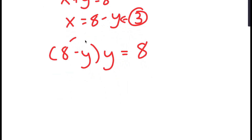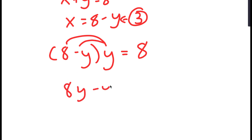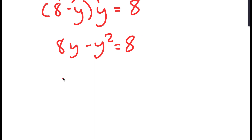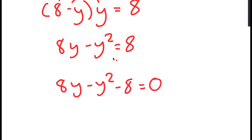Now from here, if I distribute the y, I get 8y minus y squared is equal to 8, meaning 8y minus y squared minus 8 is equal to 0, after subtracting 8 on both sides.